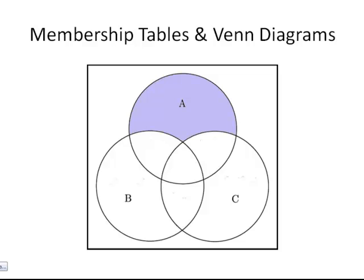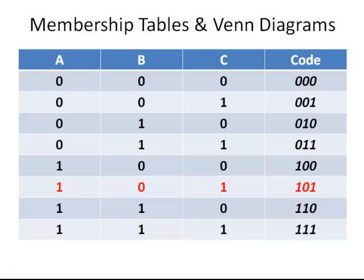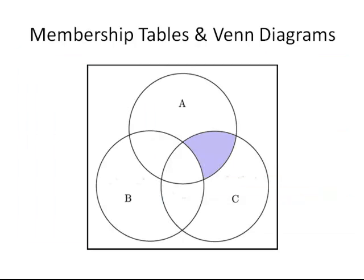Next is 1, 0, 1 — part of A and part of C but not part of B. It is enclosed by circle A and enclosed by circle C, but outside circle B.